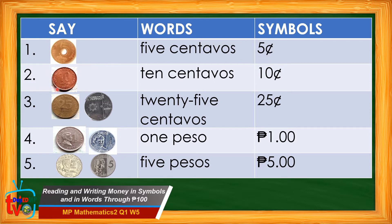In number two, we say ten centavos. If we write it in words, we write the words ten then centavos. And if we write it in symbols, we write the amount first which is ten followed by a centavo sign. We read this as ten centavos.